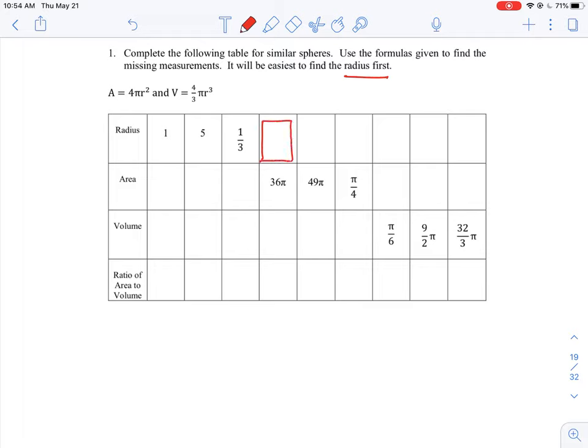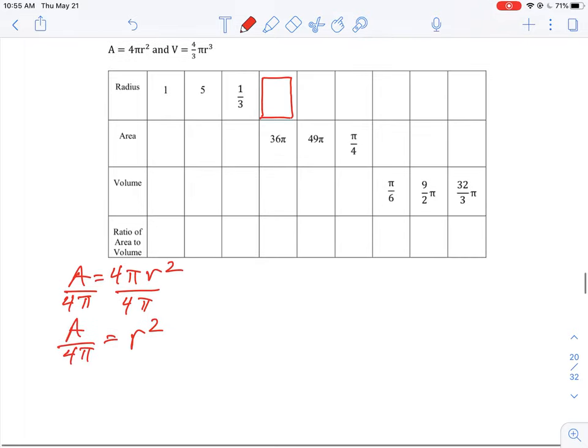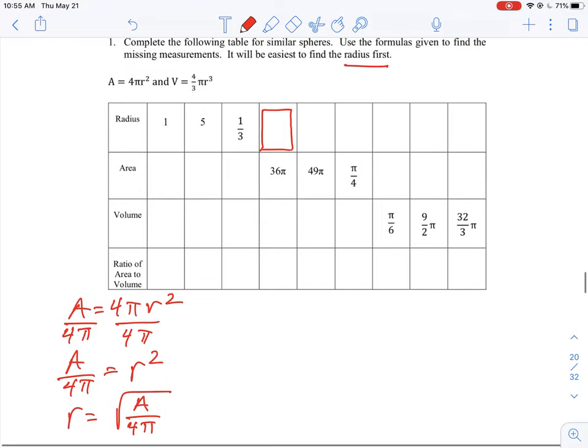Okay, so given the area, we want to find the radius. So we know the area formula is 4πr². Rearranging this to solve for r means we have to divide both sides by 4π. Okay, and then this is going to let us know that r² is equal to area over 4π, which means that r itself is equal to the square root of the area divided by 4π. Okay, so let's go and plug in some of those values here.